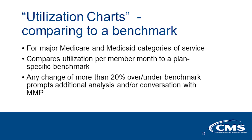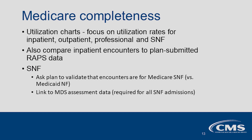The MMCO encounter team also prepares utilization charts for major Medicare and Medicaid categories of services. The charts compare utilization per member month to a plan-specific benchmark. Any change 20% over or under the benchmark prompts additional analysis and conversation with the plan. For the Medicare utilization charts, we focus on utilization rates for inpatient, outpatient, professional, and SNF. We also compare inpatient encounters to plan-submitted wraps — data plans submit for each inpatient admission that support risk adjustment. For SNF, we ask the plan to validate that the encounters are for a Medicare skilled nursing facility service, rather than a Medicaid custodial nursing facility service.